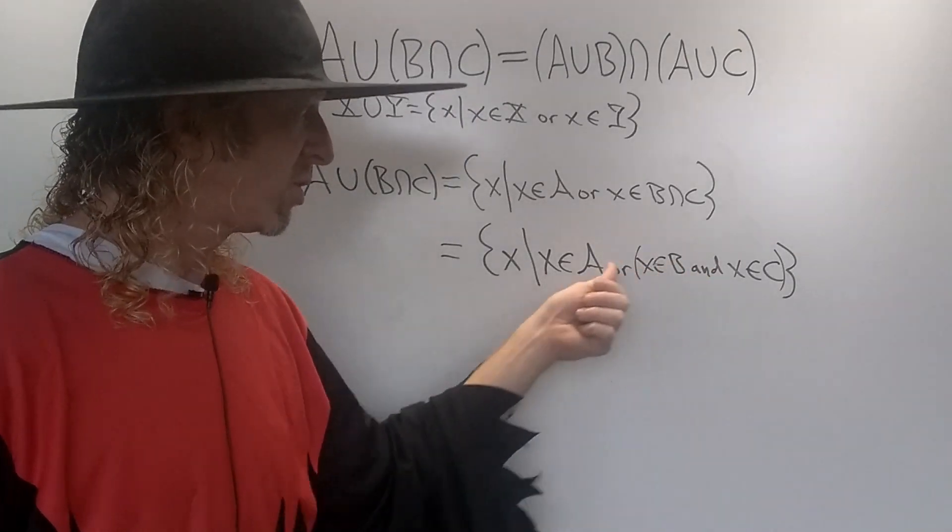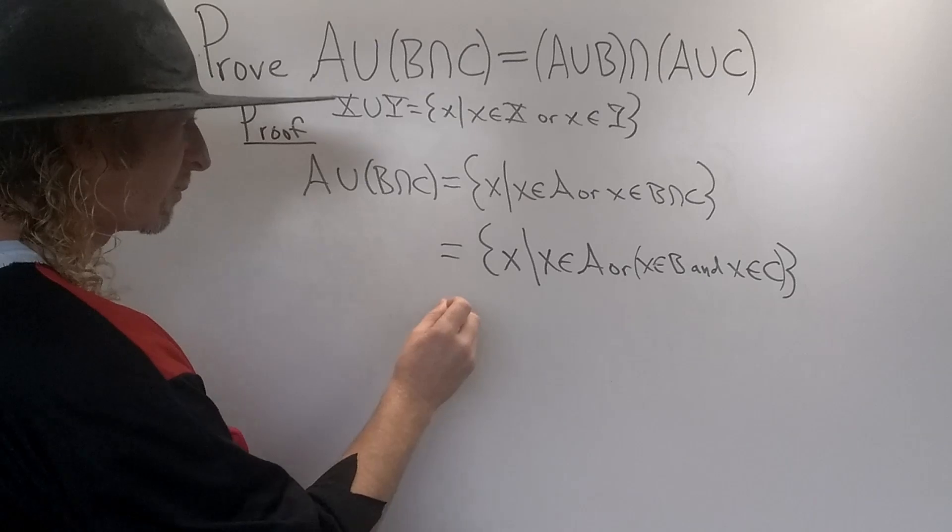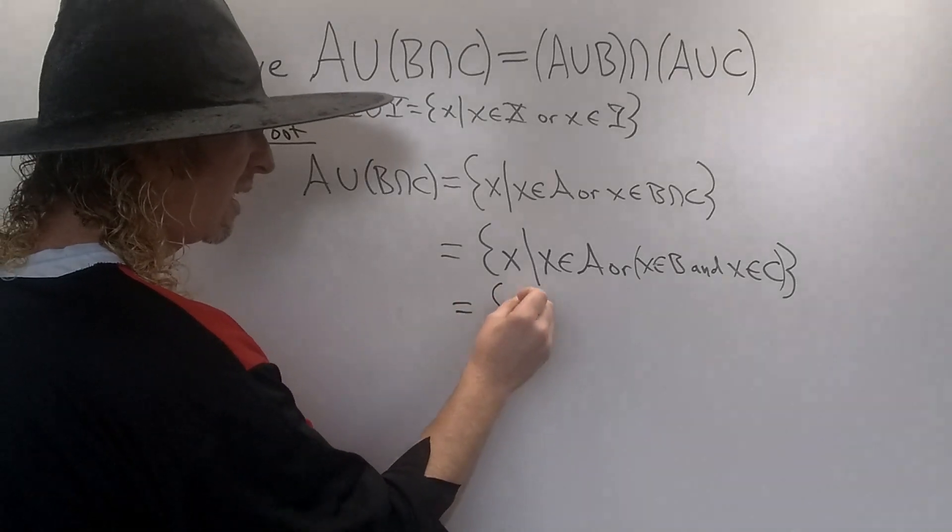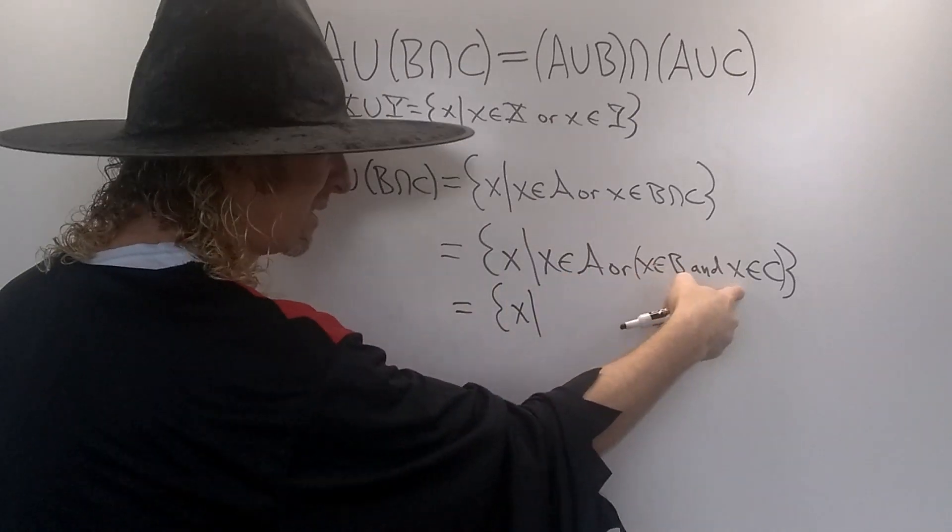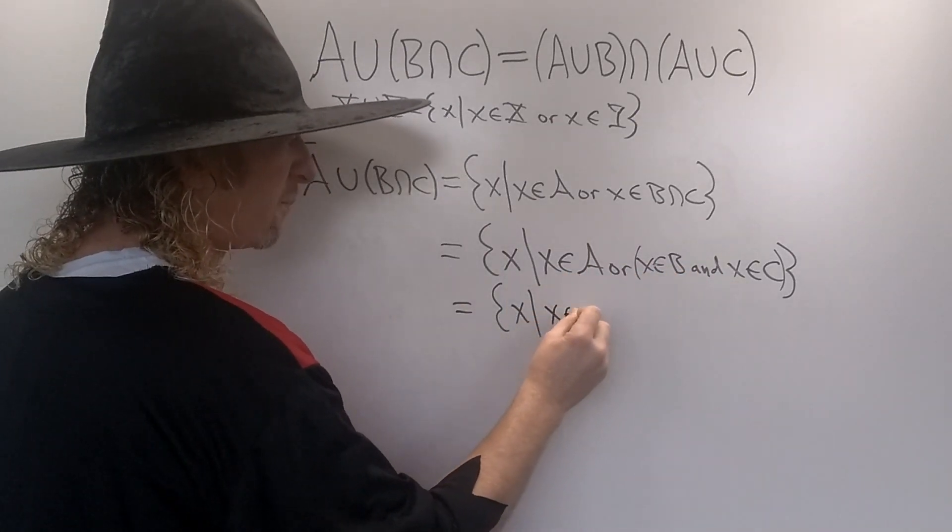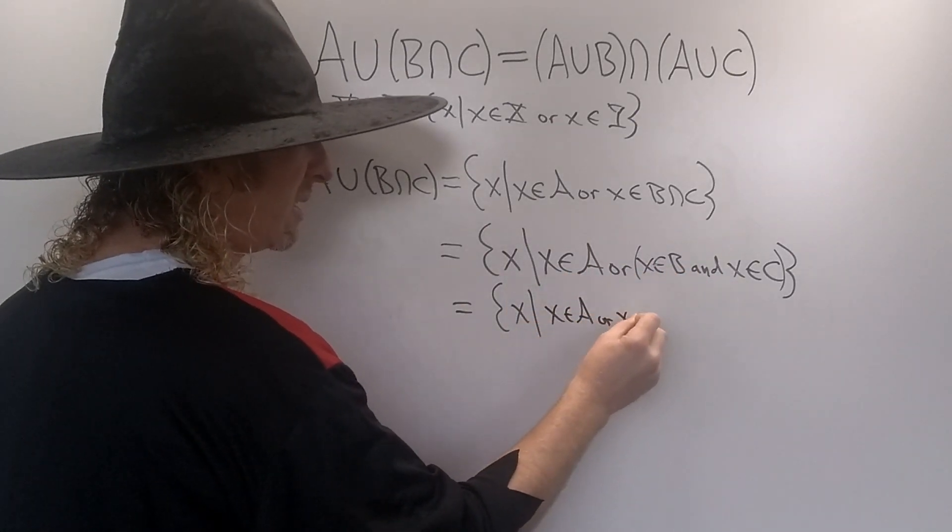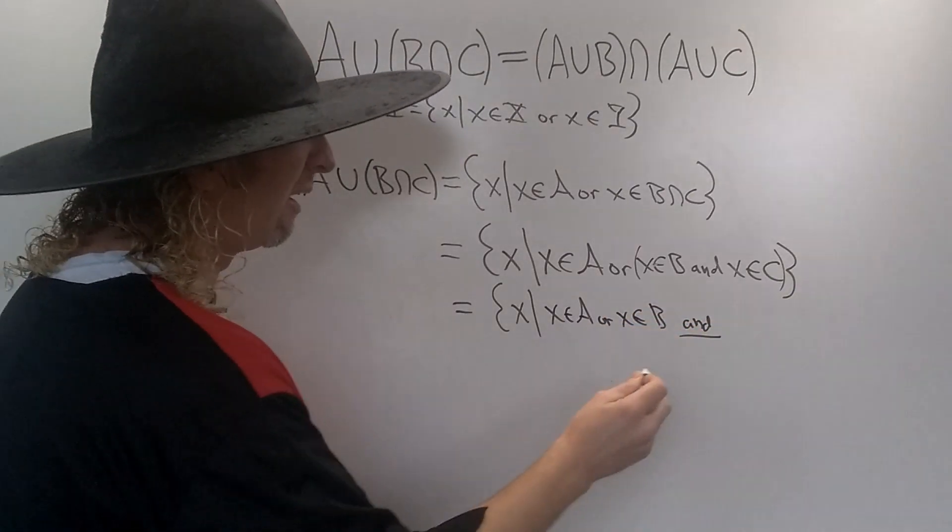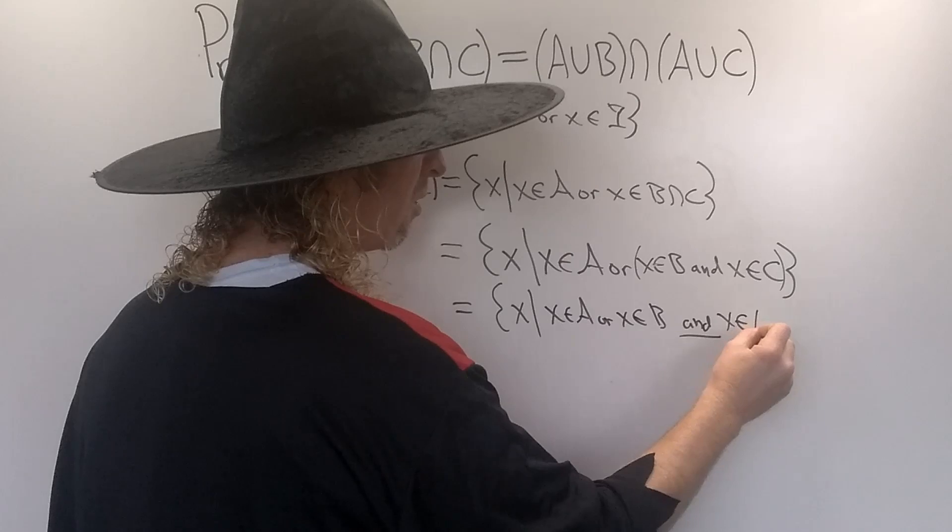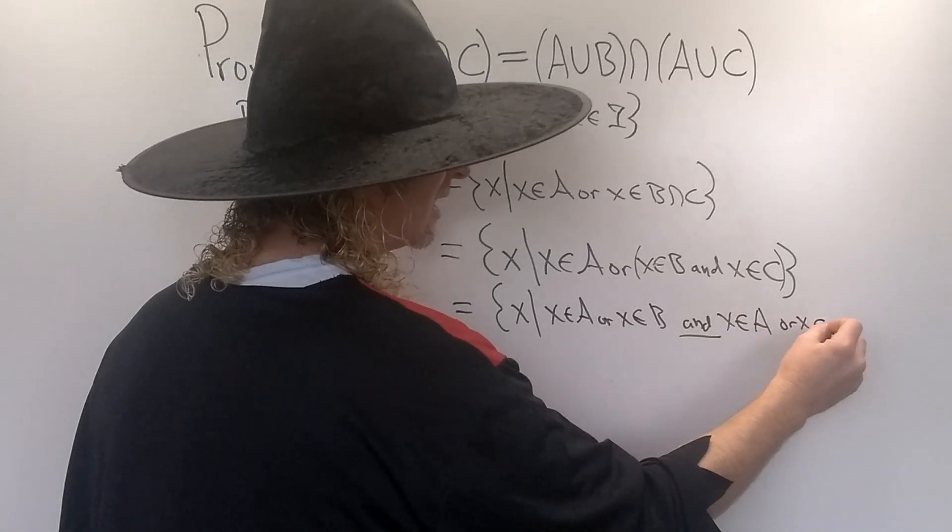And or distributes over these. So this is the same thing as saying x in A or x in B, and x in A or x in C. So this is x in A or x in B, and I'm going to underline the and for added clarity, and x in A or x in C.